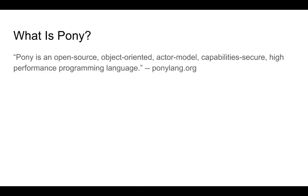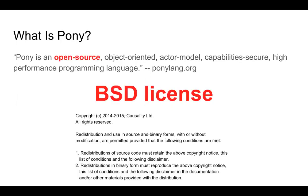I want to start off with what Pony is. If you go to the ponylang.org website you'll see this description: Pony is an open source, object-oriented, actor model, capability-secure, high-performance programming language. Open source means it's BSD licensed — there's not a lot of limits to what you can do with it. You can check it out on GitHub, create your own fork, do whatever you want.